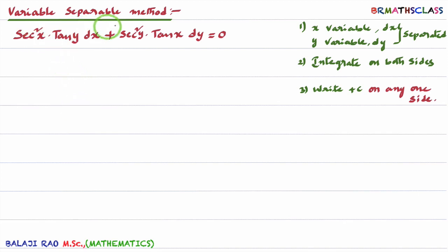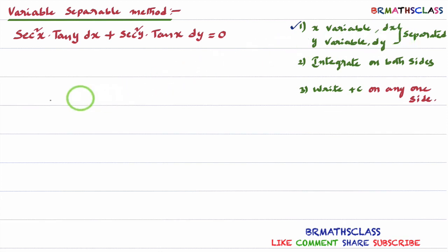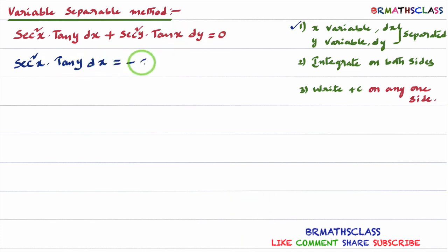They have given one differential equation. In examination, they may ask like this: solve the differential equation, or they can ask: find the general solution of this differential equation. In variable separable method, you need to remember three steps. First, x variable dx and y variable dy are separated. What I will do here is take secant square y into tan x into dy to the other side. Secant square x into tan y into dx equals minus secant square y into tan x into dy.